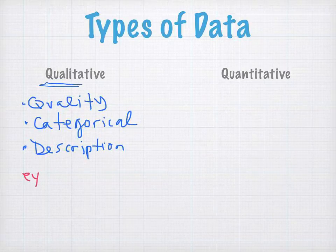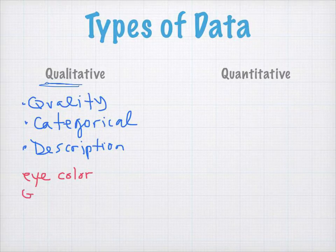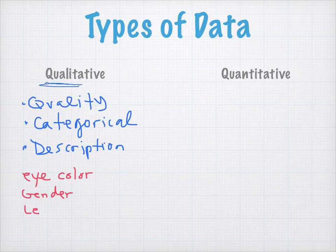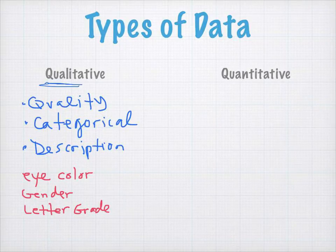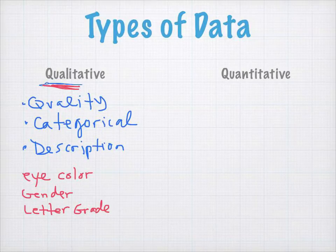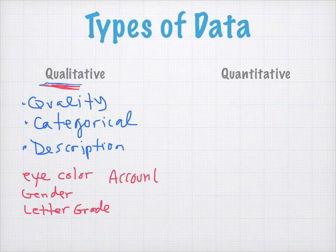Examples of qualitative data might be eye color, gender, or letter grade on a final exam. These aren't numbers; they are things that are describing something, or they are categories. Something else we're going to talk about soon is something like an account number. Your bank account number would actually be qualitative — it's categorical — and we're going to see why shortly.